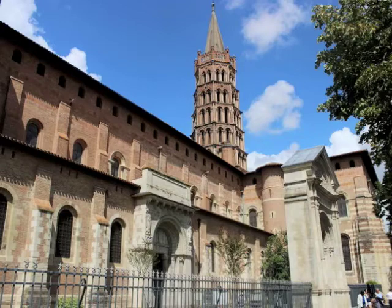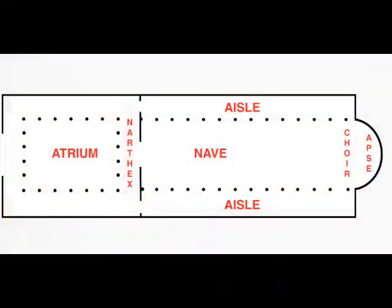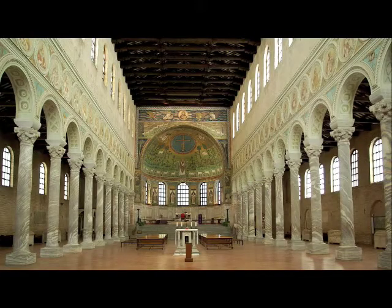Our typical Romanesque pilgrimage church can be described as a big and long basilica plan with modifications. The basilica plan first appears in Christian church architecture between the 4th and 6th centuries in Rome and other early Christian centres. A typical early Christian basilica plan is rectangular. It has a central nave flanked by one or two aisles, separated by columns, indicated in this plan by dots. The nave is higher than the aisles, and the aisles can sometimes be two stories high — the upper story is called a gallery.